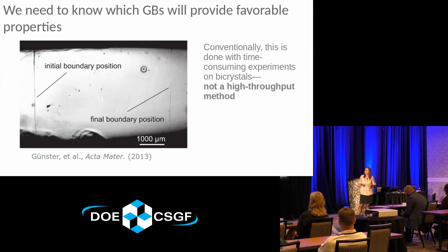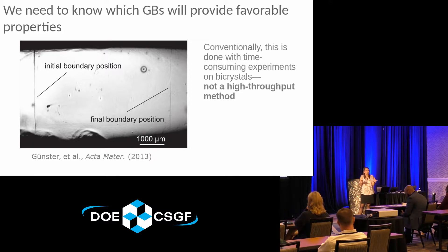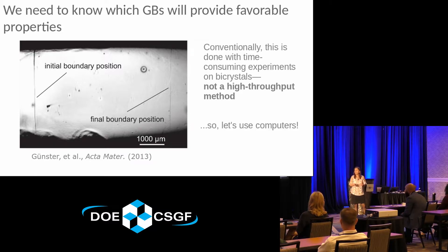Traditionally, if you want to figure out what properties a grain boundary will have, there's a very involved process of forming a bi-crystal — you make one grain and another grain and stick them together, then do a long involved experiment to try and drive that grain boundary to do something so you can measure its properties. This is absolutely not a high-throughput method, and if we want to probe the five-parameter orientation space of grain boundaries, we're not going to be able to do it this way. Hopefully everyone here is thinking: why don't we use computers to solve this problem?